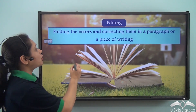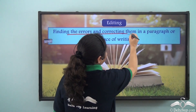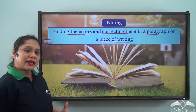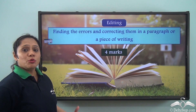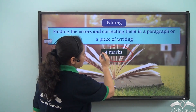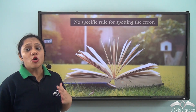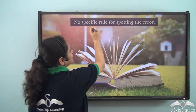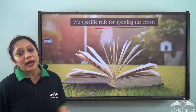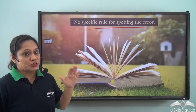Editing refers to the process of finding errors and correcting them in a paragraph or a piece of writing. In your CBSE class 10 board exam, you get an exercise for editing which is of four marks. Remember that there are no specific rules for spotting the error — you have to rely on your knowledge of grammar and common sense.